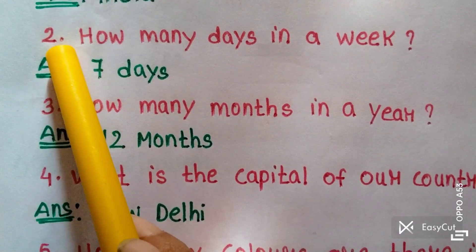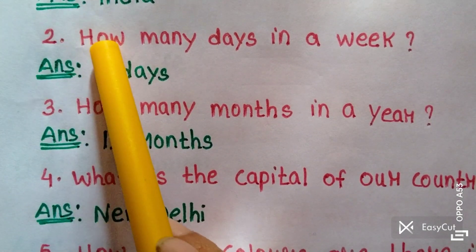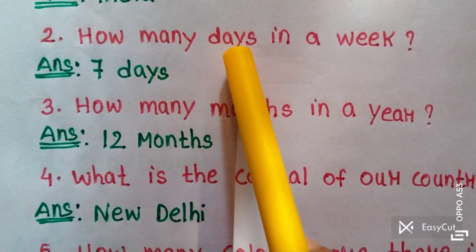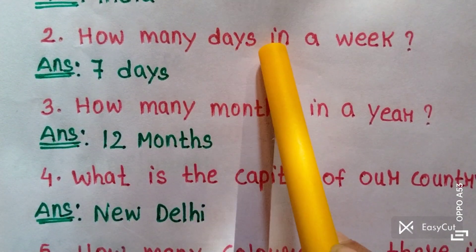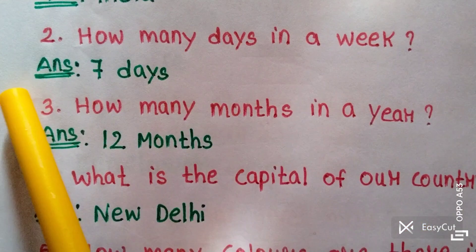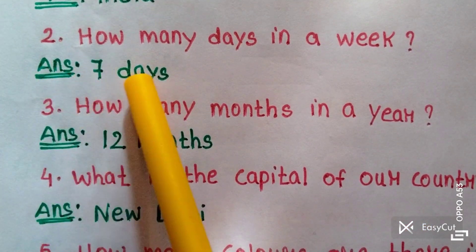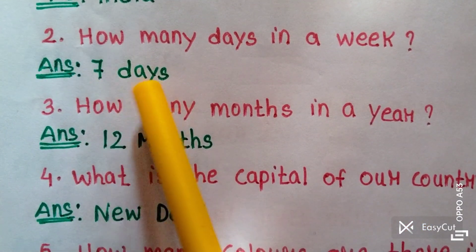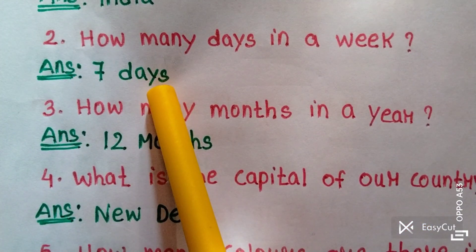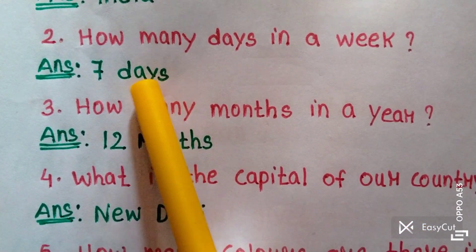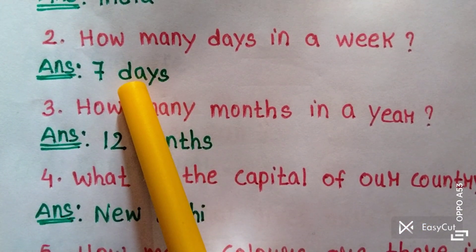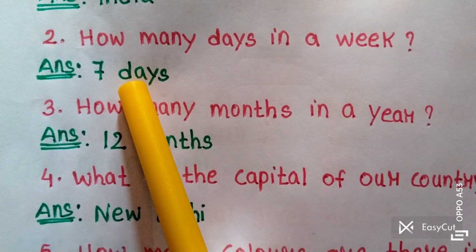Question two: How many days are in a week? Answer: Seven days. There are seven days in a week.